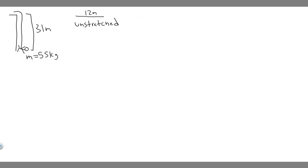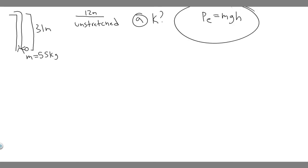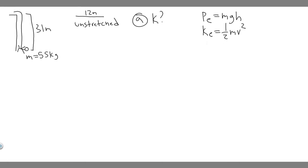Let's start with Part A — calculate the spring constant K. We're going to use three equations: potential energy equals MGH, kinetic energy equals one-half MV squared, and the energy in a spring equals one-half KX squared, where K is the spring constant we're trying to calculate and X is the distance the spring is stretched or compressed.